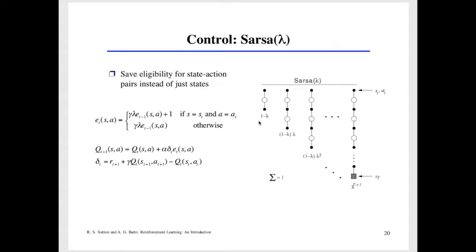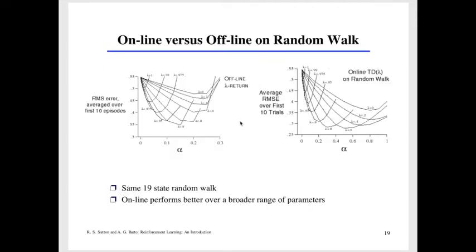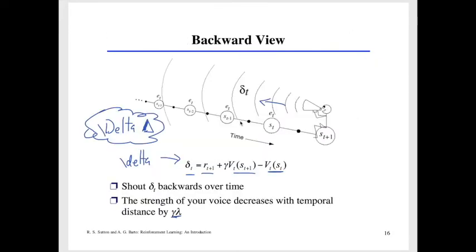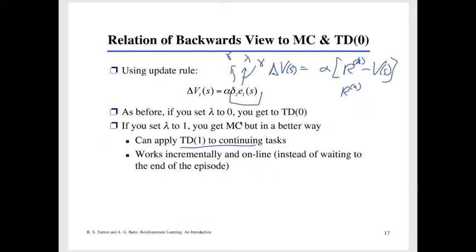So how would this work for an actual algorithm? Let's consider how we'd use eligibility traces to implement SARSA, but with more than a single TD calculation, so we call it SARSA lambda. We can use eligibility traces to keep track of how recently we've visited different states.